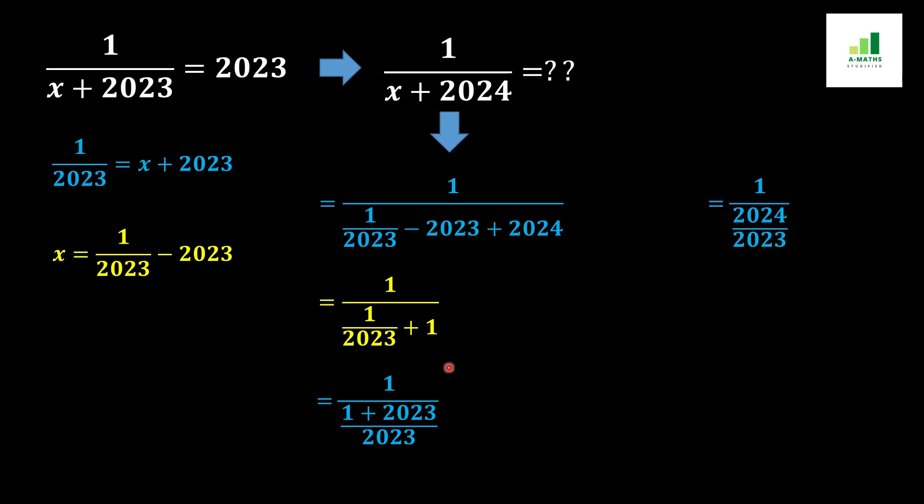Now in the next step, this 1 plus 2023 will add up together and we should get 2024 over 2023. As we know that three fractions are considered to be an unstable condition, so for this purpose we should move this 2023 from denominator to numerator and we should get 2023 over 2024.